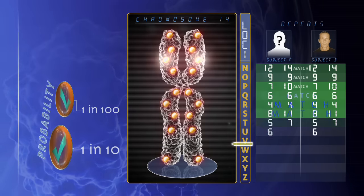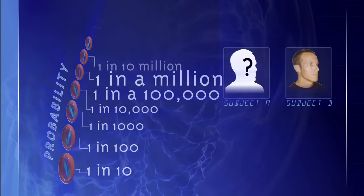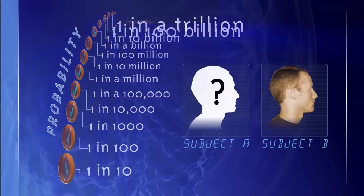If 13 sites match, the odds that any two people would possess such a fingerprint are so small, about 1 in 10 trillion, that the result can be considered a definitive match.